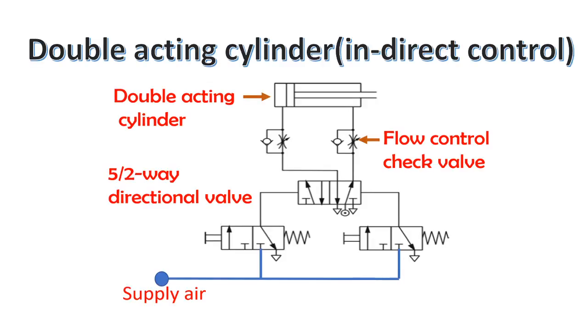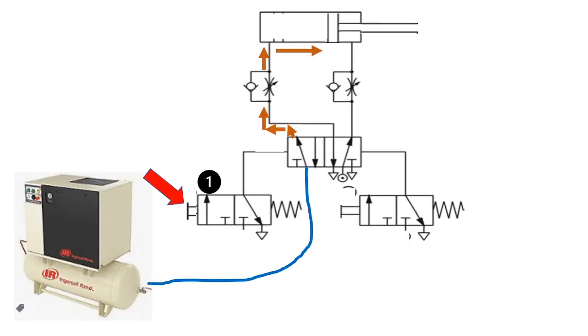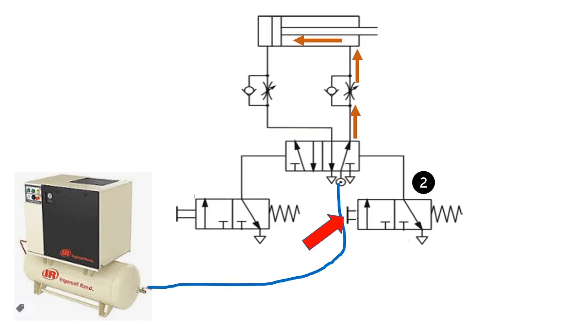This is a double acting cylinder and directional control. A double acting cylinder is to advance when number one push button is pressed, and it will remain extended until the number two push button is pressed. When the number two push button is pressed, the cylinder is to retract.